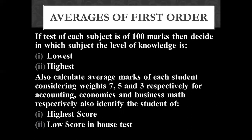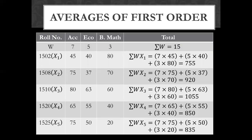We have all the weights. The total weight is 7 plus 5 plus 3, which equals 15. I have 5 students assigned variable names: student 1502 as x1, 1508 as x2, 1510 as x3, 1520 as x4, and 1525 as x5. We need to find the weighted total for each student.